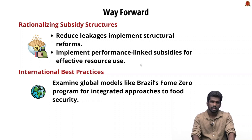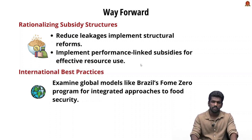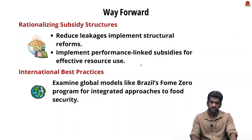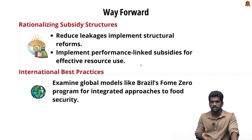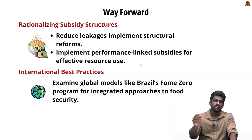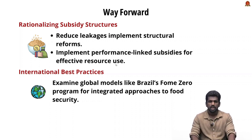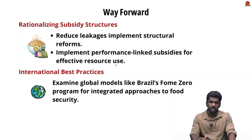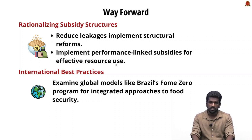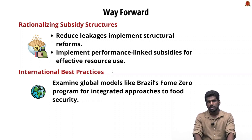We should prioritize cutting down leakages and implementing structural reforms to prevent the political exploitation of subsidy programs. Adopting performance-linked subsidies to ensure effective use of fertilizer and food grains would reduce the risk of wastage and focus on long-term agricultural productivity, which in turn impacts food security. Learning from international best practices — such as Brazil's Fome Zero program, which successfully combined food security with nutrition and agricultural development while reducing poverty — is also important for addressing India's food subsidy issues.